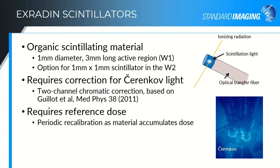We use a two-channel chromatic correction based on a publication from Matthew Gouillot in Medical Physics from 2011. We're splitting the light into two different color bands and using the change in signal in one color band to correct the primary color band where our scintillation signal is.